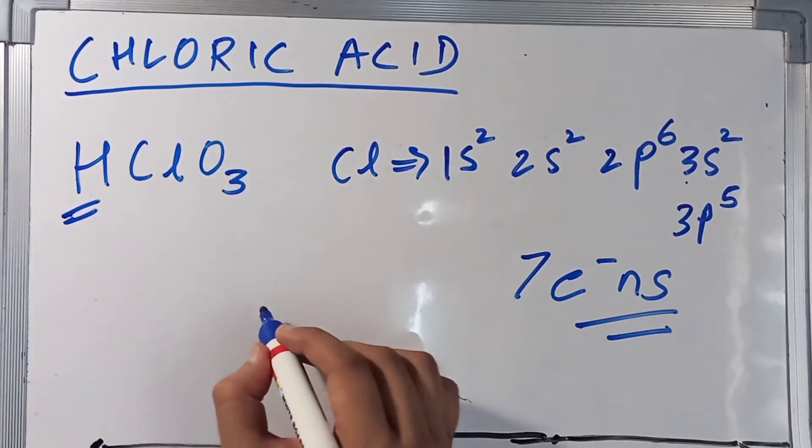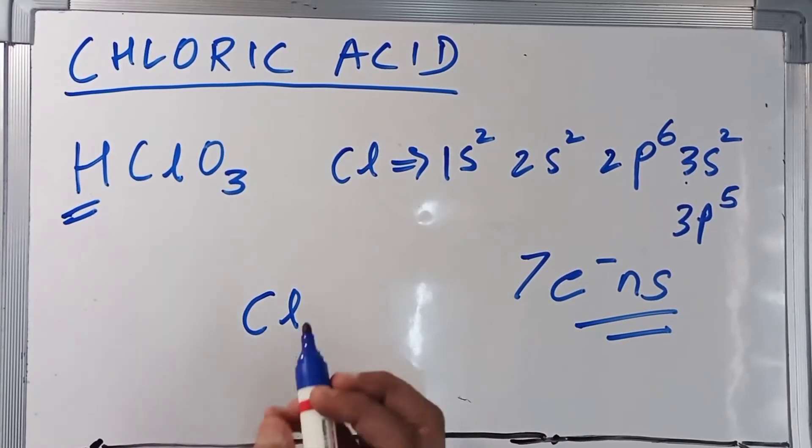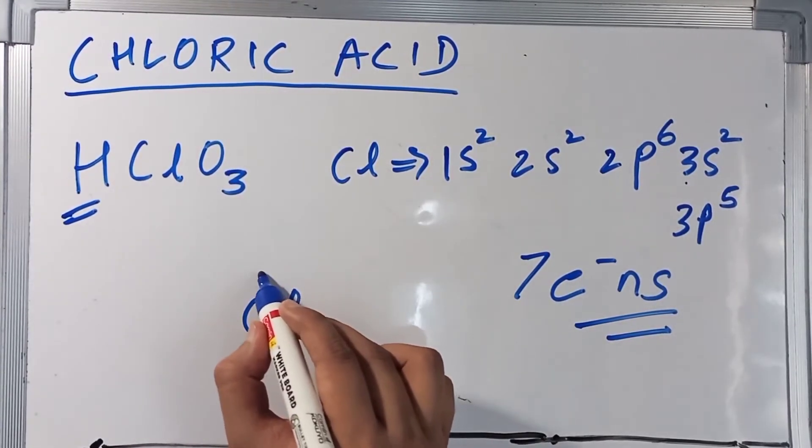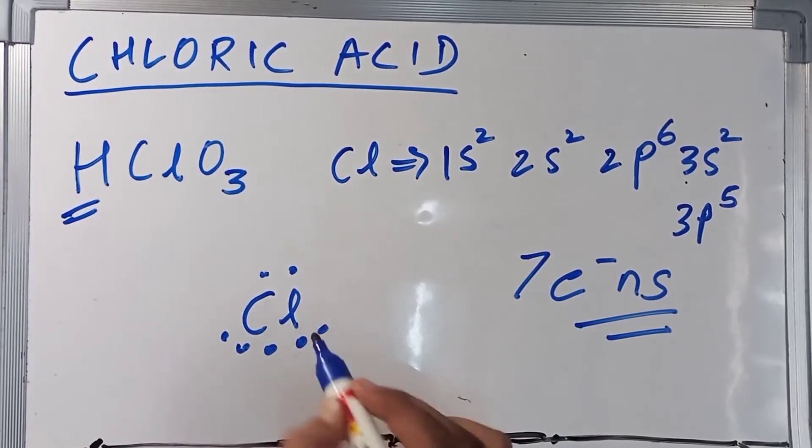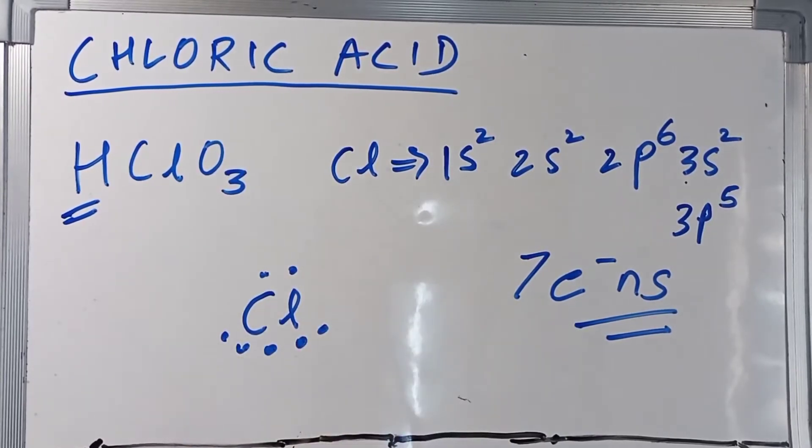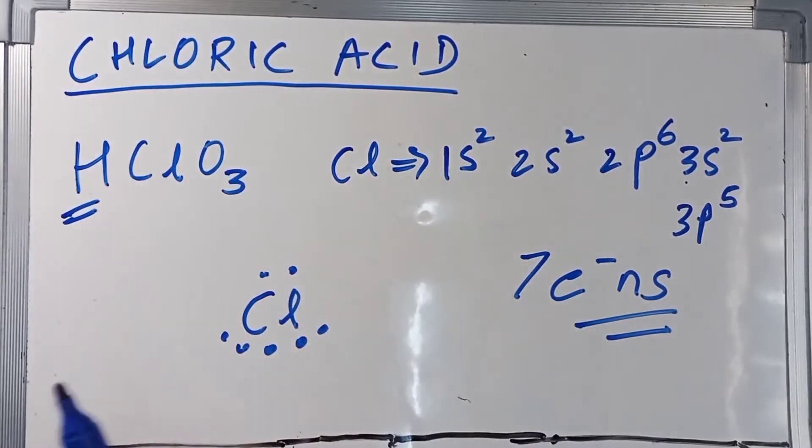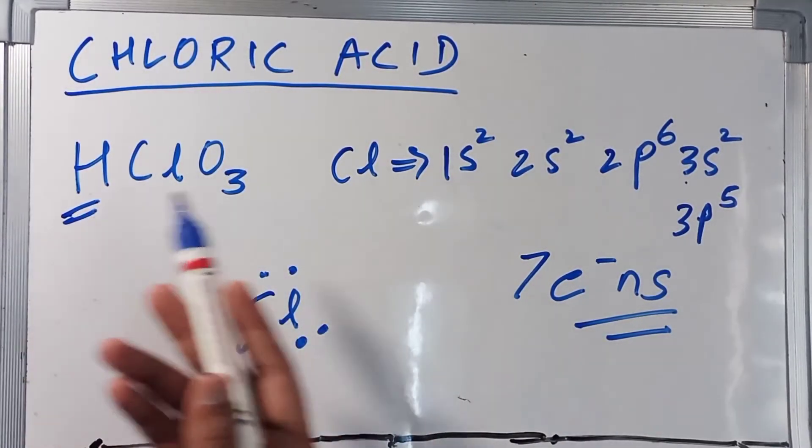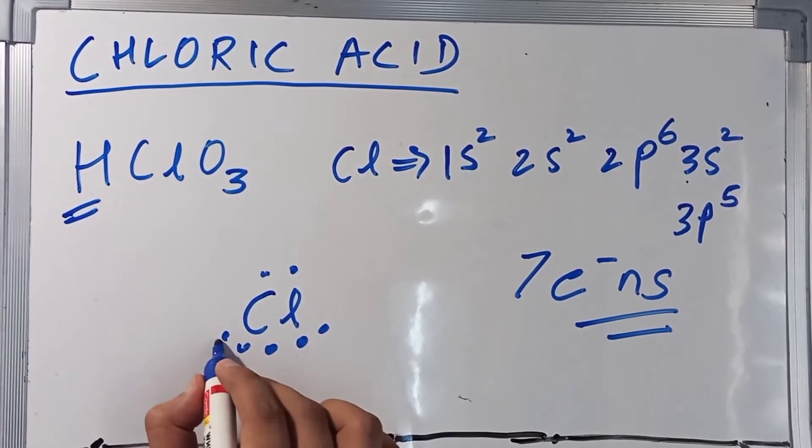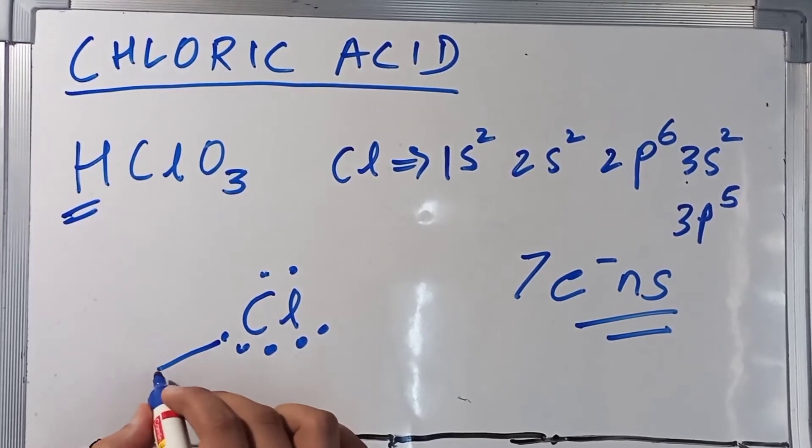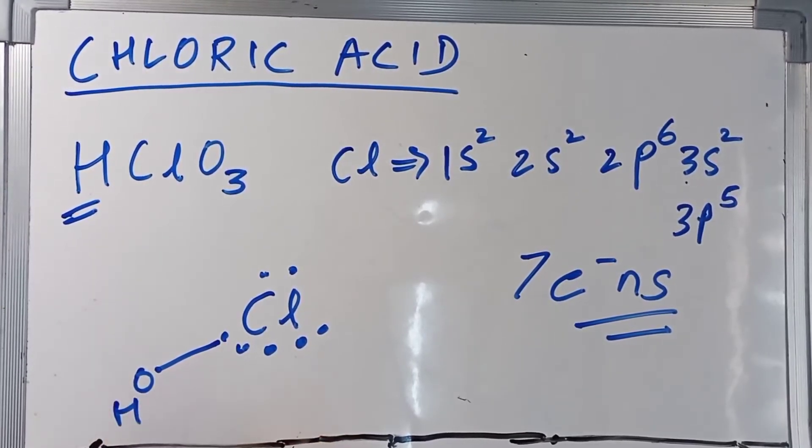Now, we are drawing the central atom chlorine and it has 7 electrons, right? 1, 2, 3, 4, 5, 6, 7. Now, previous to this I wrote number of H is equal to number of OH bonds. Let it be like this OH first.